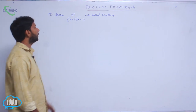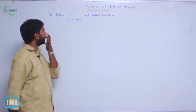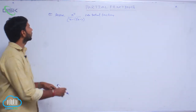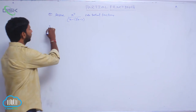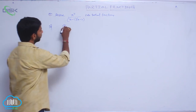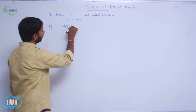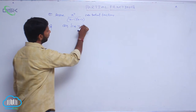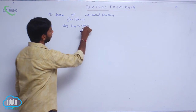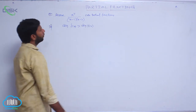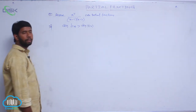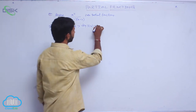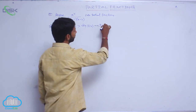Resolve x to the power 4 by (x minus 1) into (x minus 2) into partial fractions. Here the degree of the numerator, that is the degree of f(x), is greater than the degree of g(x). When the degree of f(x) is greater than the degree of g(x), the fraction is said to be an improper fraction.